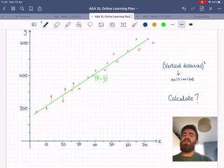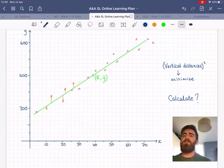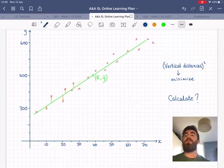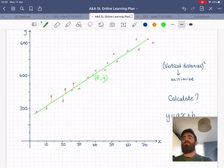So on a GDC, how do we find it? It's actually exactly the same process as finding the correlation coefficient. If you remember, the final screen was to click on linreg ax plus b, and that's actually showing you a and b as well as r. And those values for a and b will be what we're going to plug in to our equation. It'll be a linear equation, as it's a straight line.